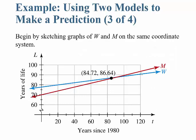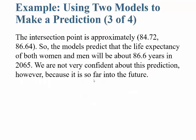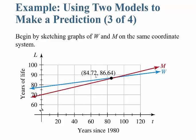If we graph this, in blue you can see the life expectancy of women, and in red the life expectancy of men. They will be equal at approximately 84.72 years since 1980, with a life expectancy of 86.64 years. So the intersection point is approximately (84.72, 86.64). The models predict that life expectancy of both women and men will be about 86.6 years in the year 2065 — rounding 84.72 to 85 and adding to 1980. We're not very confident about this prediction because it's so far into the future and so much can change. Regardless, we graphed the two lines and looked at where they intersect.